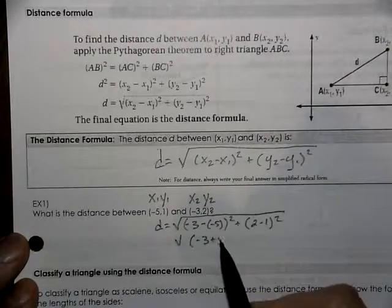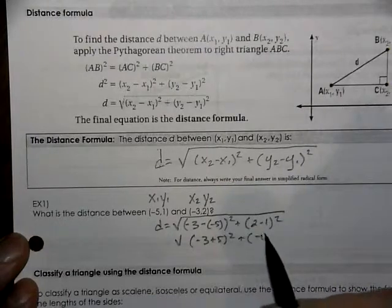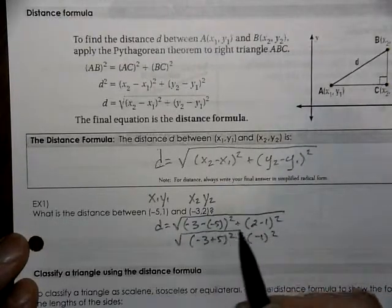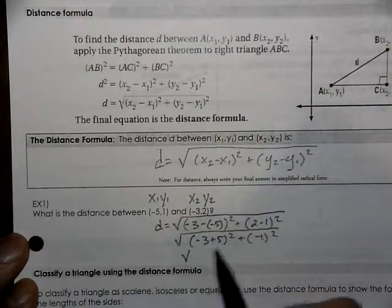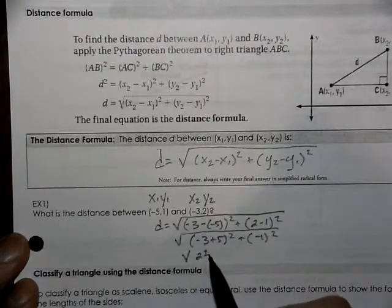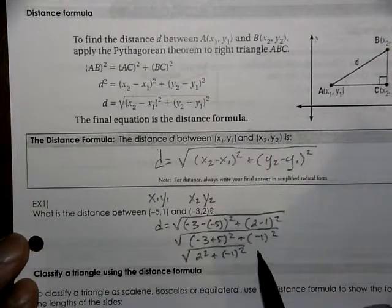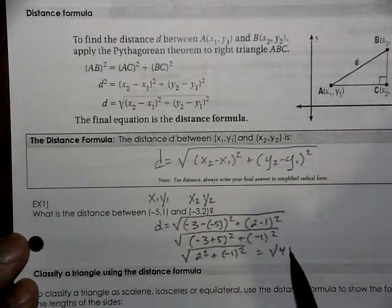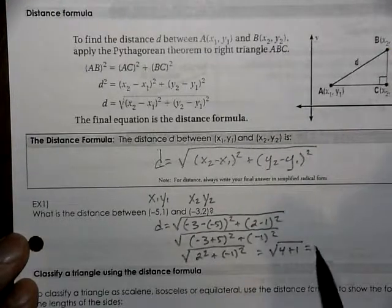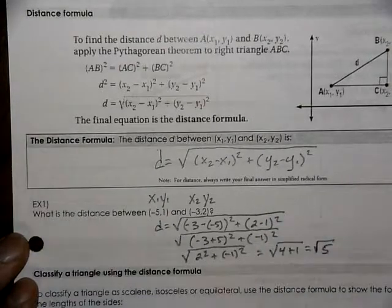Negative 3 plus 5 squared, negative 1 squared. So we've got 2 squared plus a negative 1 squared. 4 plus 1 gives you the square root of 5.